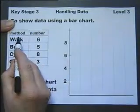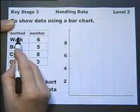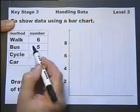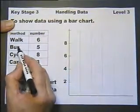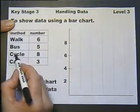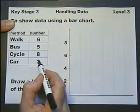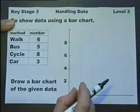So we've got the method of going to school. Six people walk, five people go by bus, eight people use their bike, and three people go by car.